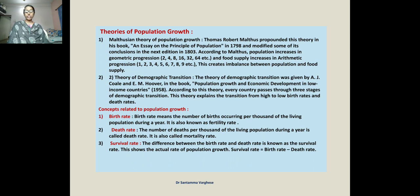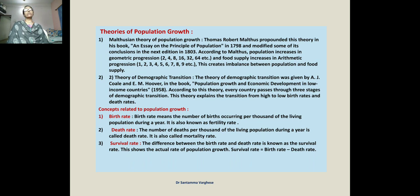According to this theory, population increases in geometric progression — 2, 4, 8, 16, 32, 64, 128 — and so on. However, food supply increases only in arithmetic progression. This creates an imbalance between population and food supply. The population grows faster than the food supply, leading to food problems.